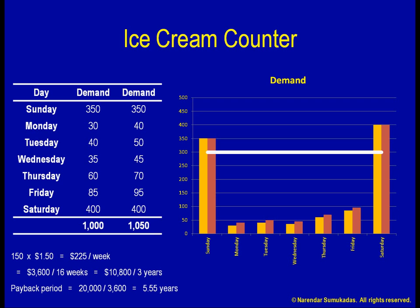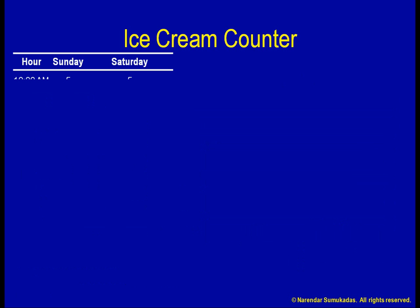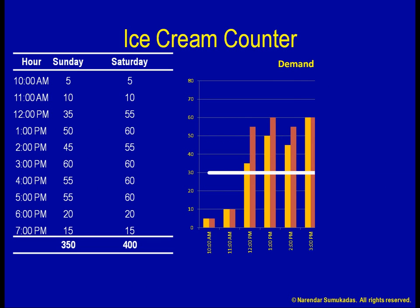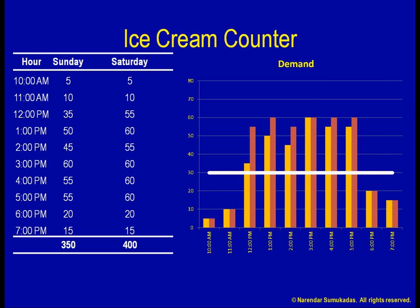Let me instead look at the demand on an hourly basis. Focusing on only Saturdays and Sundays, which are my problem days, I see that there are several times during these days when the hourly demand exceeds the hourly capacity of 30 customers per hour. On Sundays, I am not just turning away 50 customers — rather, I am turning away 120 customers. Likewise, on Saturdays, I am turning away 170 customers, not just 100. Each week, I am turning away 290 customers, not just 150 customers.